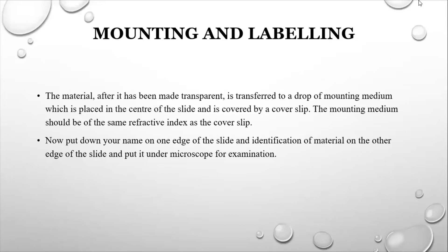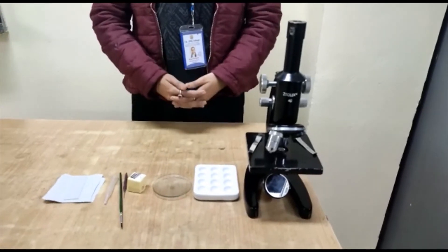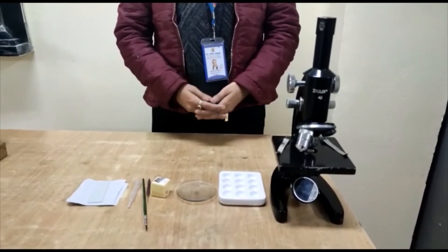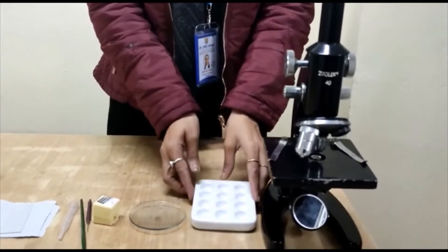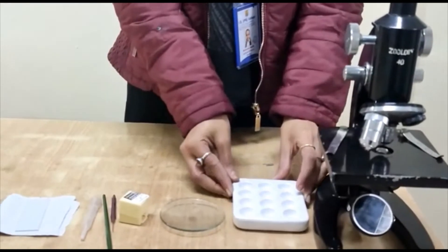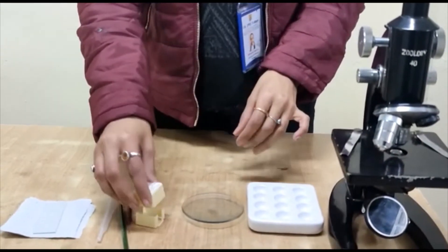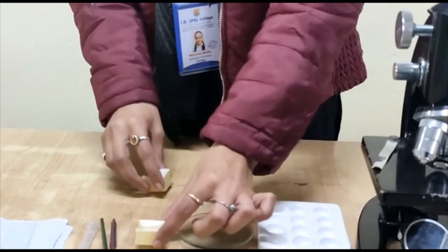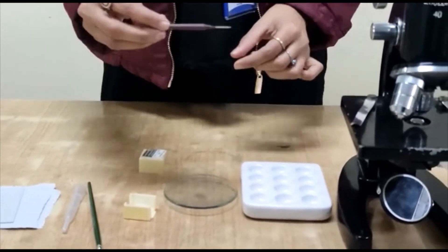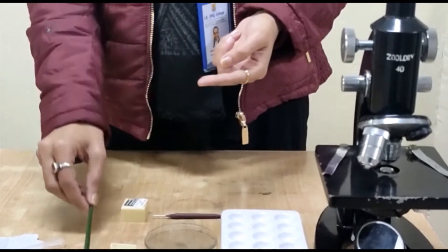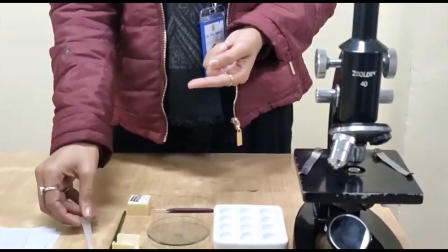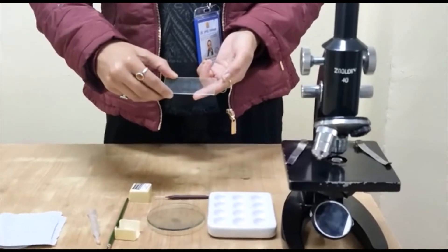Now let me give you a brief demo of this explanation of how to make the permanent slide. The material required for the process of permanent slide preparation are a microscope, a staining tray, watch glass, cover slip, a needle, a brush, a dropper, a clear and clean slide, and some filter papers.